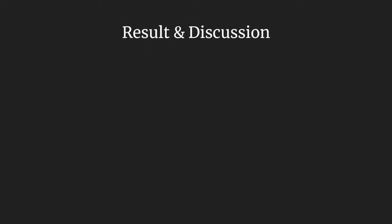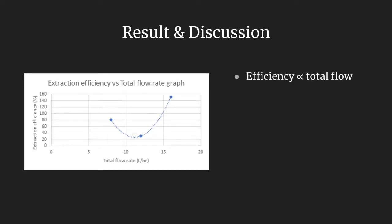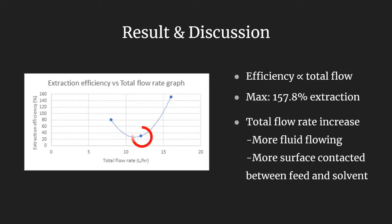In the results and discussion, extraction efficiency versus the total flow rate graph is plotted. In general, efficiency is proportional to the total flow rate, with maximum extraction efficiency up to 157.8%. The reason total flow rate is proportional to efficiency is because as more fluid flows through, there is more surface contact between the feed and the solvent, so more mass transfer occurs. However, there are some errors in this graph — the efficiency decreased when the total flow rate increased from 8 L/hr to 12 L/hr, when it should be continuously increasing.